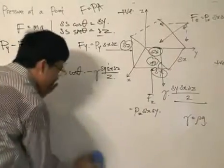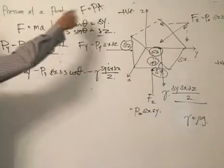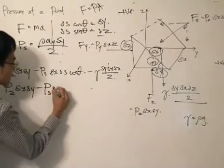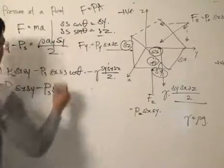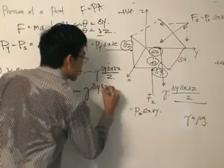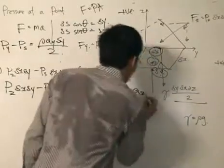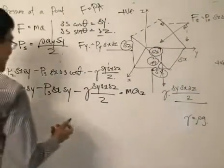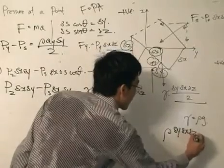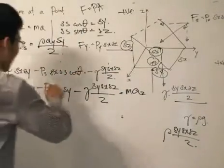Now we deal with the second equation — acceleration in the Z direction. We apply the same approach using the trigonometry identity. The pressure at Z times delta X times delta Y, minus the pressure at S times delta X — here delta X times cosine theta becomes delta Y — take away the specific weight times delta Y times delta X times delta Z divided by 2, equals the mass times acceleration in the Z axis. The mass is re-expressed as density times delta Y times delta X times delta Z divided by 2, and we divide throughout by delta X and delta Y.